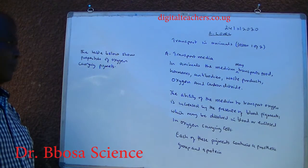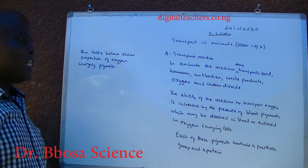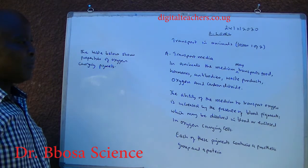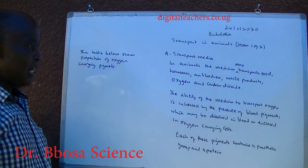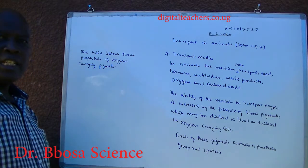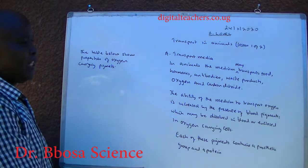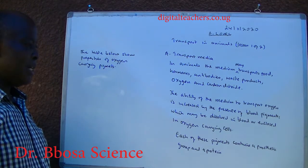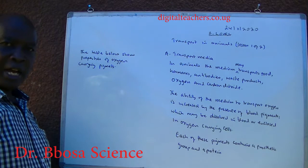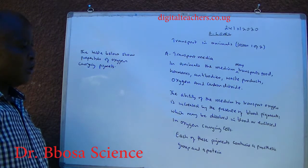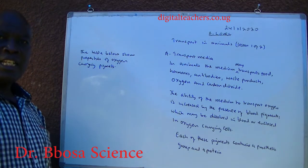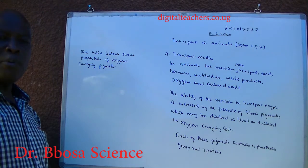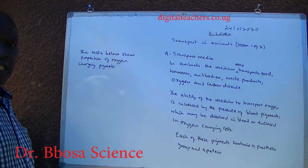Transport media: in animals, the medium may transport food, hormones, antibodies, waste products, oxygen and carbon dioxide. The ability of the medium to transport oxygen is increased by presence of blood pigments, which may be dissolved in blood or enclosed in oxygen-carrying cells. Each of these pigments contains a prosthetic group and a protein.